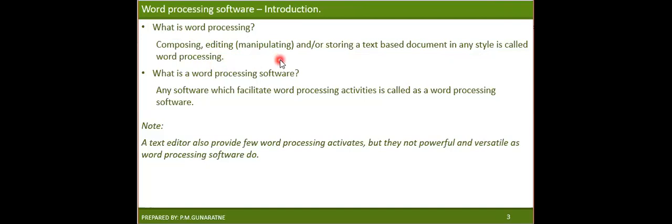Some examples of word processing are creating letters, creating birthday cards, creating invitations, creating reports, and theses. All of them are examples of word processing. Any software which facilitates word processing activities is called word processing software. If a certain software facilitates all those kinds of activities related to word processing, then it can be called a word processing software.